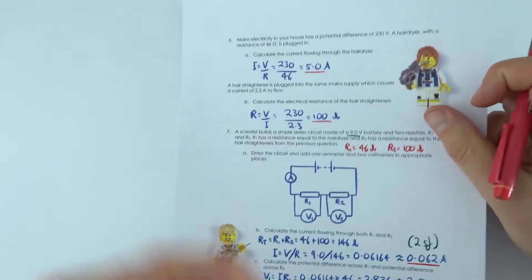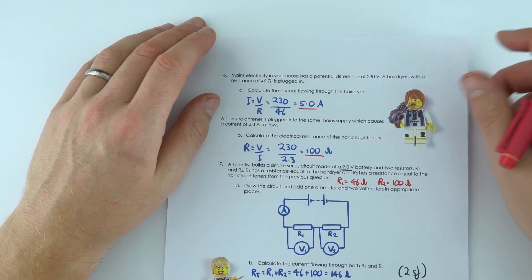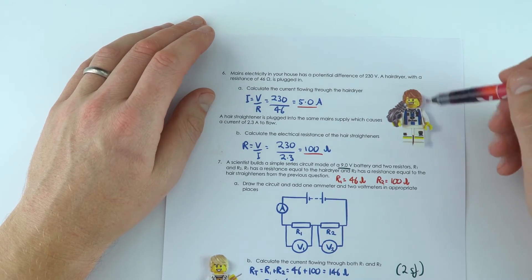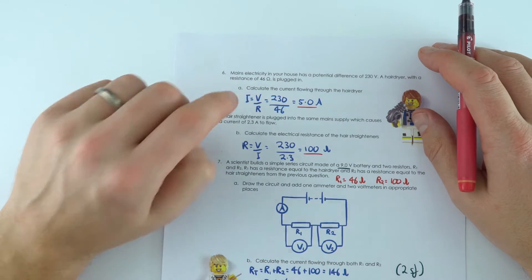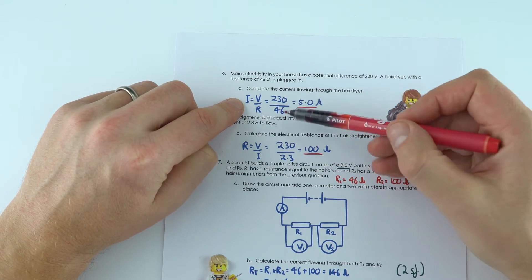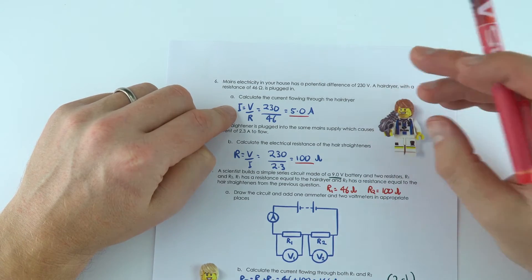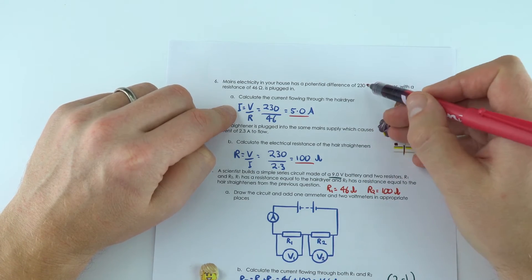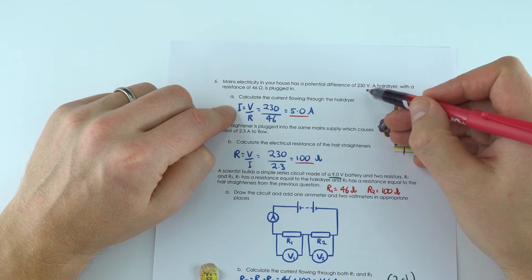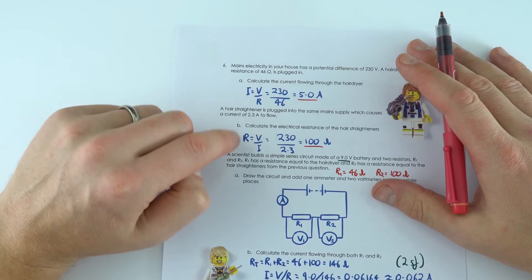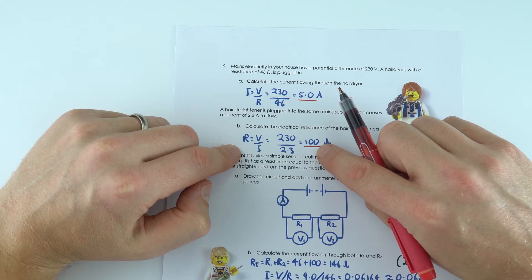Okay, on the other side we've got a question about a hairdryer, so we've got a footballer here doing his hair. The current for the first one was 5 amps. We just took the data from the question, and a lot of the time if we're looking at mains appliances, they have a potential difference of 230 volts, which is why I used that figure. For the hair straighteners, we found that the resistance is 100 ohms.